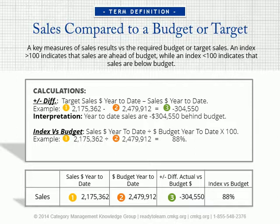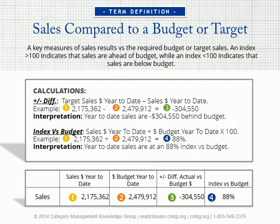An index versus budget can also be calculated, which is the sales dollars year-to-date divided by dollar budget year-to-date. In our example, $2,175,362 sales dollars year-to-date divided by $2,479,912 budget dollars year-to-date equals an 88 index versus budget. An index over 100 indicates that sales are ahead of budget, while an index below 100 indicates that sales are below budget. One of the key measures that category managers are evaluated on is sales performance versus budget.